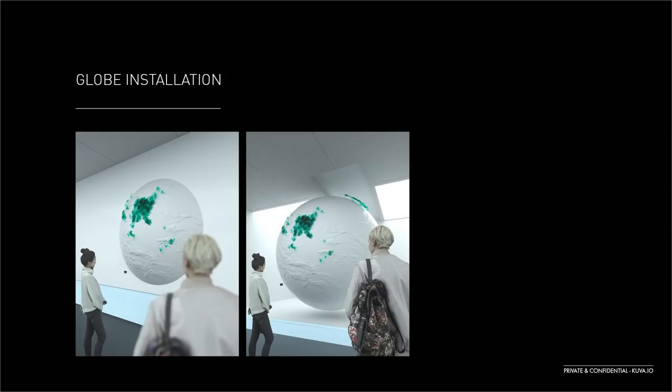Looking at the physicality of the installation itself, what you see here is a very initial scamp for it. Our current thinking is that we would show a thin sliver of the globe itself, as opposed to the entire object, peppered with these crystal-like structures — again referencing Scott's work in Symphony 2.0 — but really creating a physical moment that is intriguing and engaging, drawing viewers and participants over to the installation itself and encouraging them to engage with it.